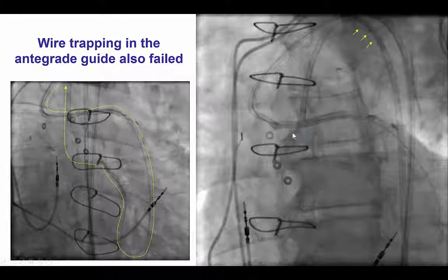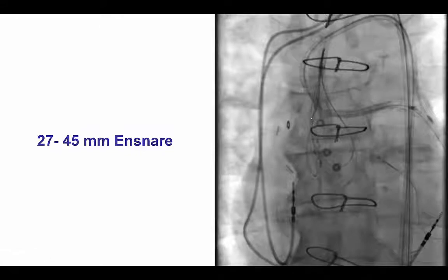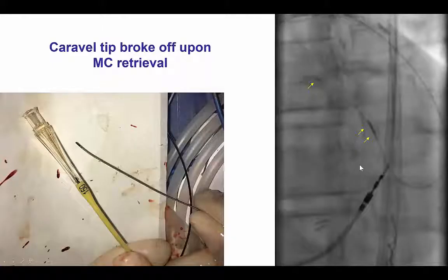Although we were able to get the guidewire in the antegrade guide catheter using a trapping balloon to trap the retrograde guidewire, we were unable to advance the retrograde Caravel microcatheter into the antegrade guide catheter. In the process, we lost the guidewire and used an ensnare to re-snare the wire. But despite multiple attempts, we were unable to advance the Caravel through the recently placed left main stent.